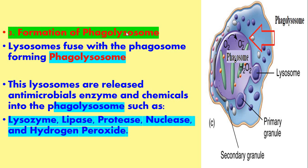Number three: formation of phagolysosome. The lysosome fuses with the phagosome, forming the phagolysosome. This lysosome releases antimicrobial enzymes and chemicals into the phagolysosome, such as lysozyme, lipase, protease, nuclease, and hydrogen peroxide.